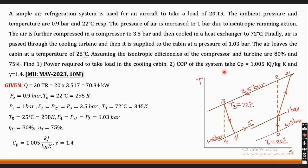Based on the conditions given in the numerical, we can plot the T-S diagram. Point 0 is the ambient condition, with pressure 0.9 bar and temperature 22°C. Then the ramming action takes place — it is isentropic ramming, due to which pressure and temperature increase isentropically up to point 1.